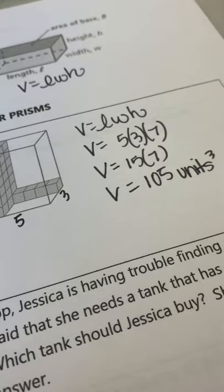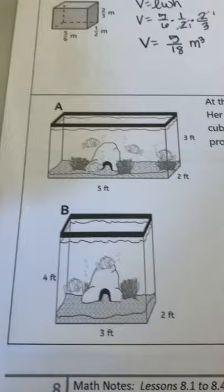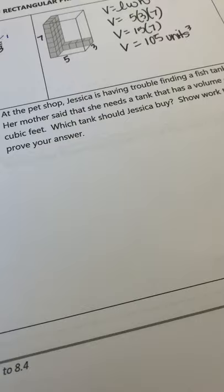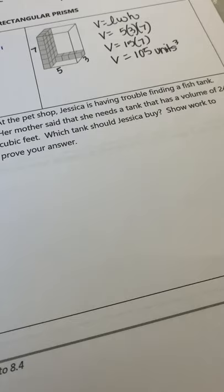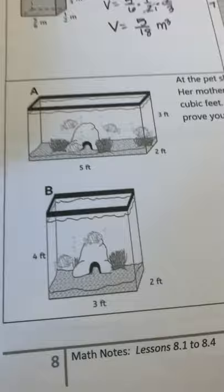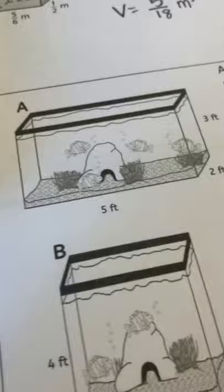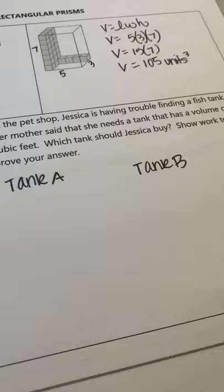Down here we have our problem involving two different fish tanks. It says, at the pet shop, Jessica is having trouble finding a fish tank. Her mother said that she needs a tank that has a volume of 24 cubic feet. Which tank should Jessica buy and show work to prove your answer? So if we take a look at these two tanks, we want to see how much water they're going to hold. That's what the volume would tell us. And so always organize your work. So I'm going to put tank A and tank B.